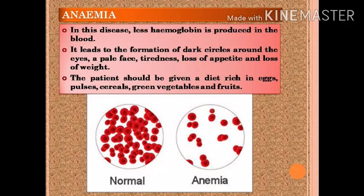Next we have anemia. In this disease, less hemoglobin is produced in the blood. It leads to the formation of dark circles around the eyes, a pale face, tiredness, loss of appetite — meaning you will not feel hungry — and loss of weight. The patient should be given a diet rich in eggs, pulses, cereals, green vegetables, and fruits. Here in the picture you can see the blood cells of a normal person, and if a person has anemia, this will be the condition of the hemoglobin in the blood.